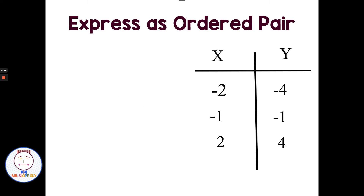So if we're given a t-table and we're asked to express an ordered pair, it's really basic — almost so easy it doesn't feel like you're doing any work. So negative 2, negative 4 is the first point from our t-table. To express that as an ordered pair, I just want to use parentheses and a comma between them: negative 2, negative 4. Negative 1, negative 1 from the t-table.